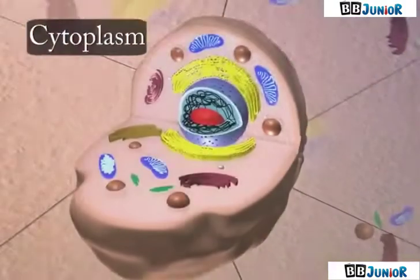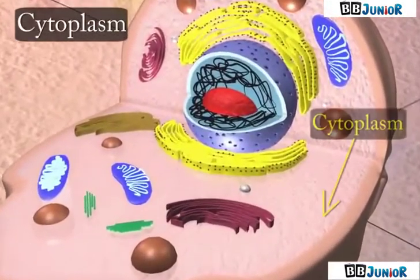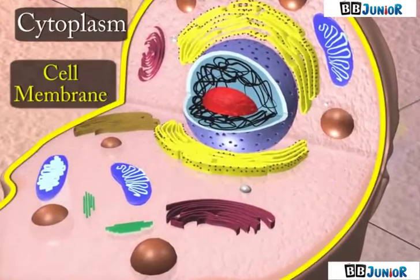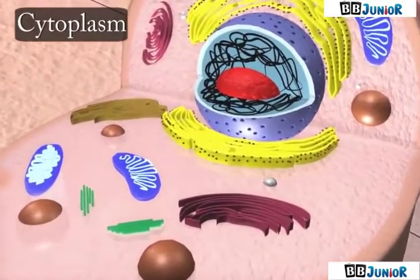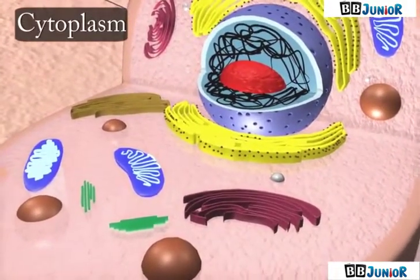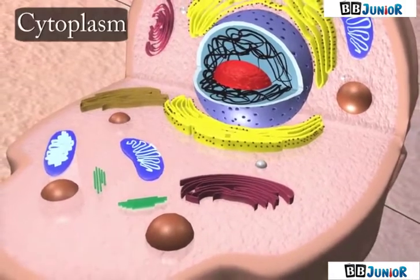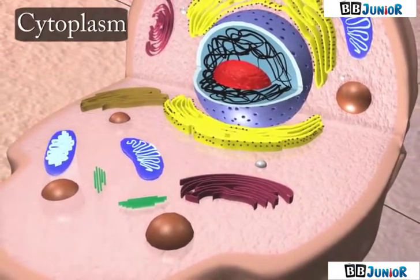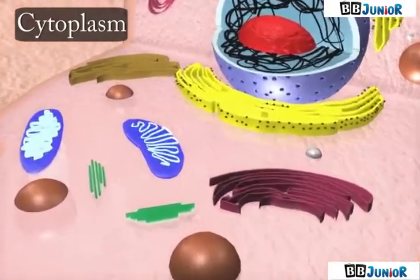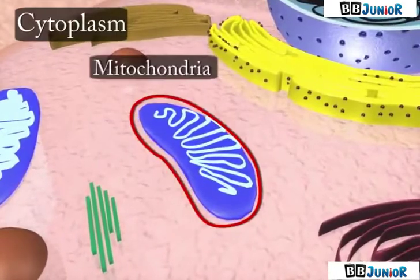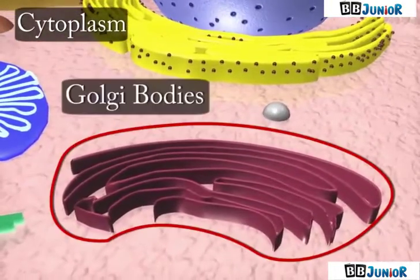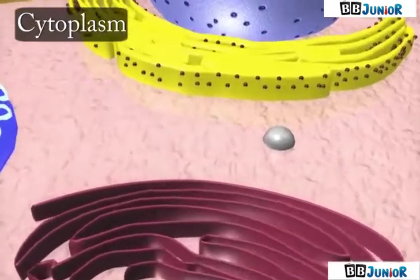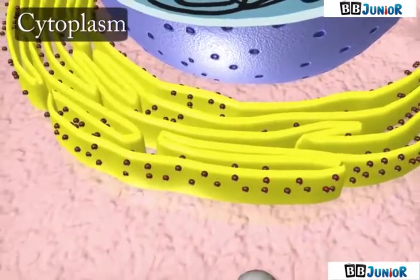Cytoplasm is the jelly-like substance present between the cell membrane and the nucleus. Various other components or organelles of cells are present in the cytoplasm. These include mitochondria, Golgi bodies, ribosomes, etc.